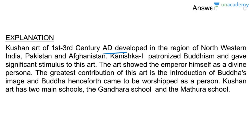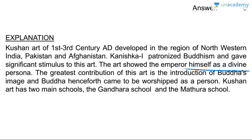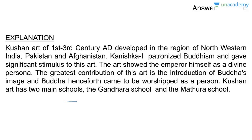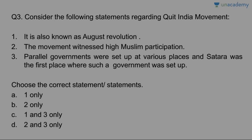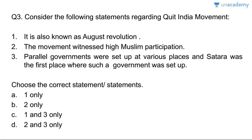Kushan art of the first to third century AD developed in northwestern India, Pakistan, and Afghanistan. Kanishka I patronized Buddhism and gave significant stimulus to this art. The art showed the emperor as a divine persona, and the greatest contribution was the introduction of Buddha's image — Buddha henceforth came to be worshipped as a person. Kushan art has two main schools: the Gandhara school and the Mathura school.